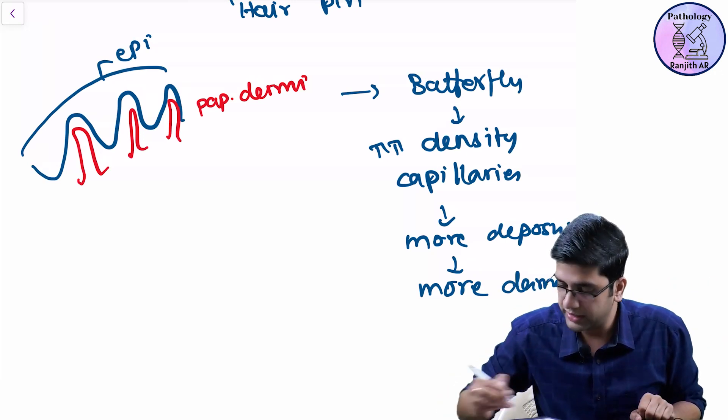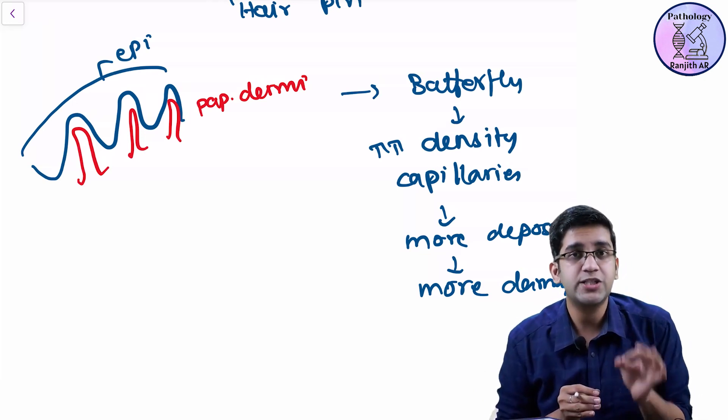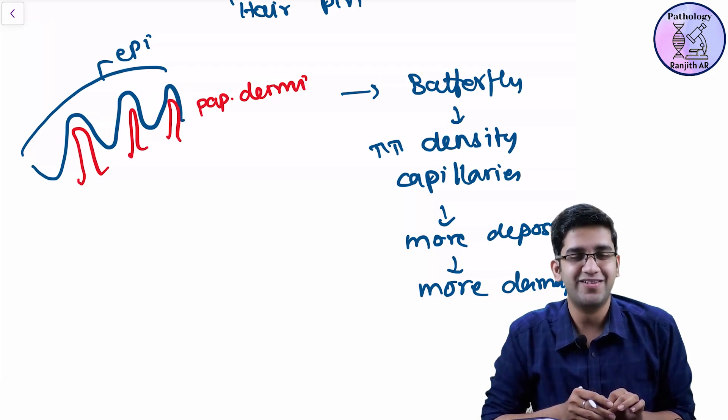Actually, if you remember, if you read the classical textbooks, it will be given you will have a malar and discoid rash which will spare your nasolabial fold. Simple reason.